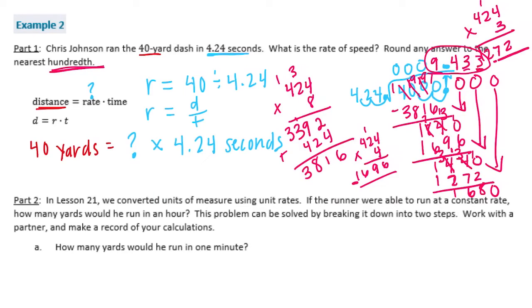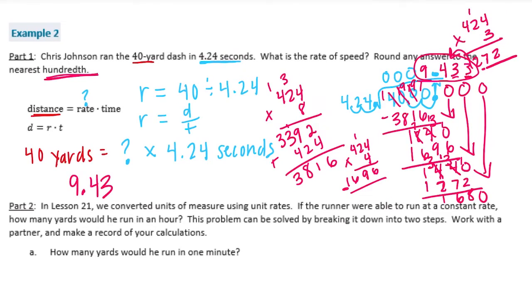We get 9 and 433 thousandths, which rounded to the nearest hundredth is 9 and 43 hundredths. So the rate is 9.43 yards per second.